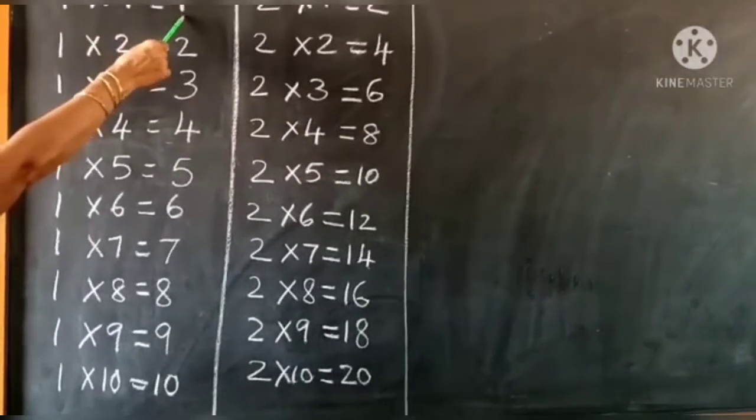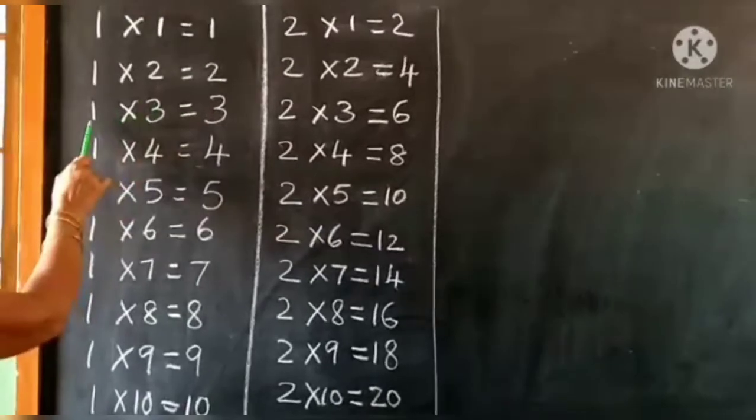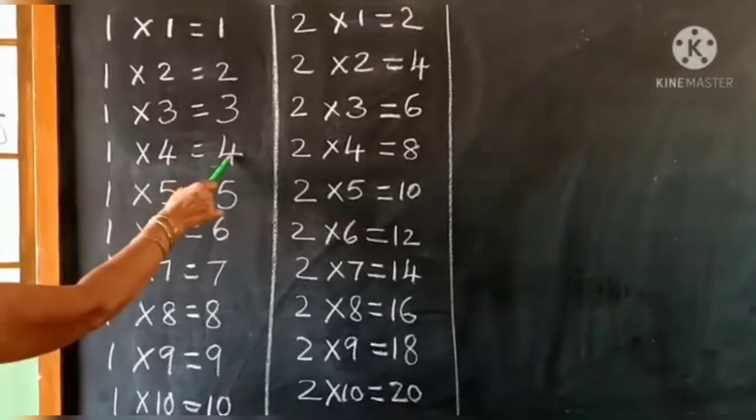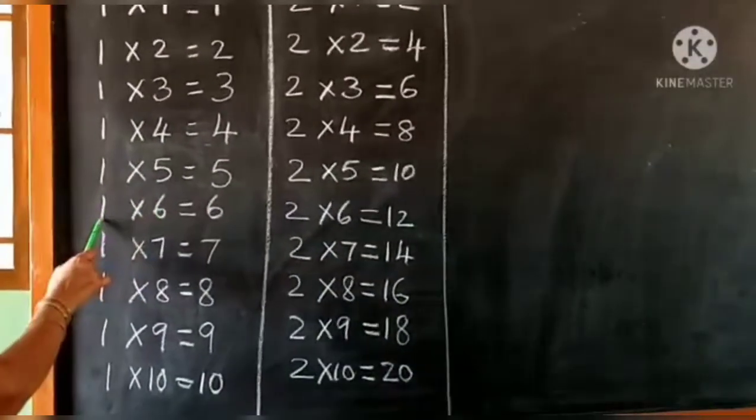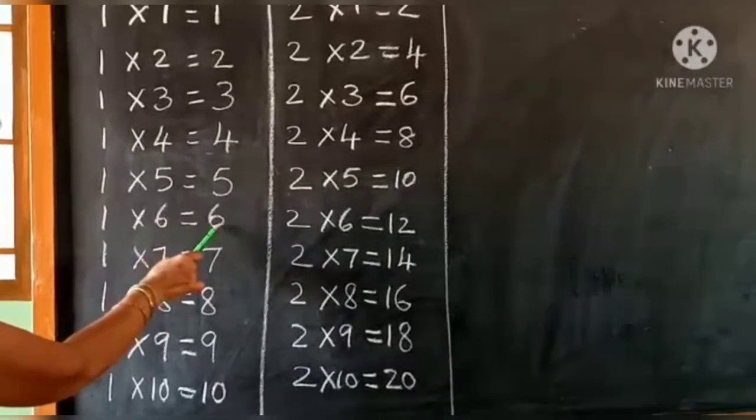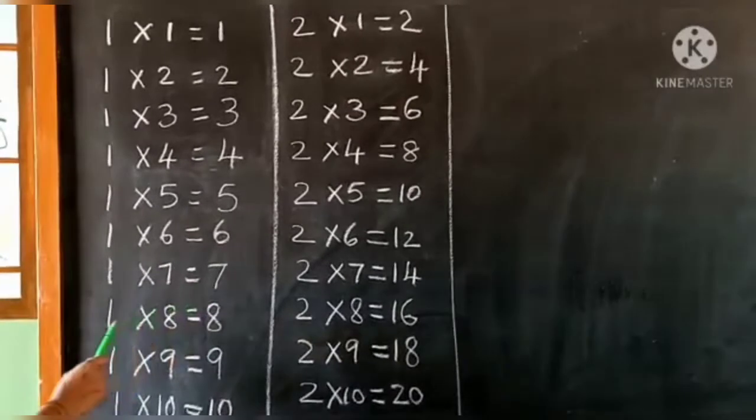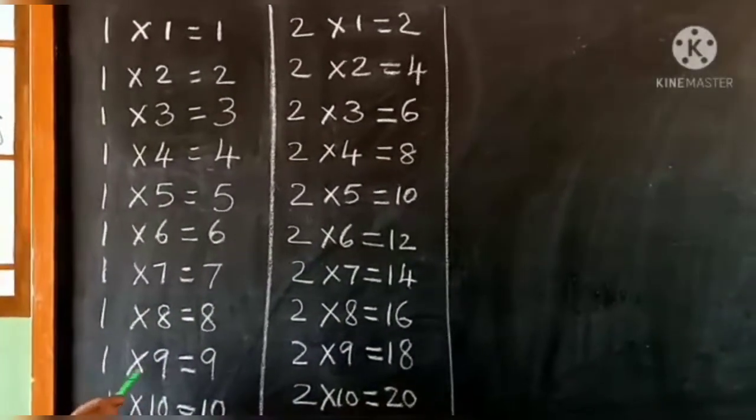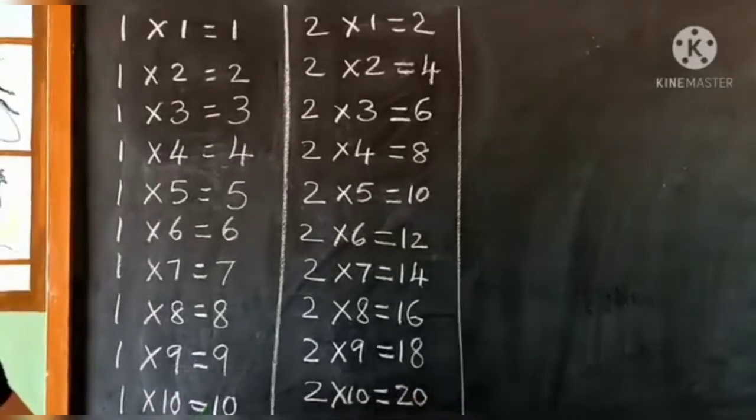One ones are one, one twos are two, one threes are three, one fours are four, one fives are five, one sixes are six, one sevens are seven, one eights are eight, one nines are nine, one tens are ten.